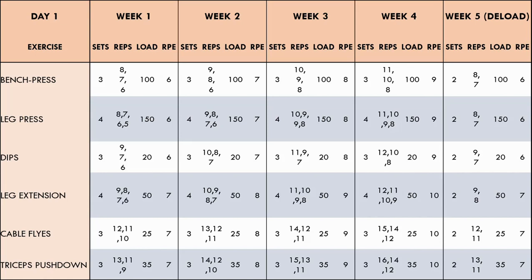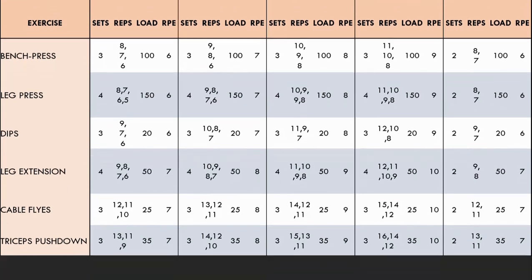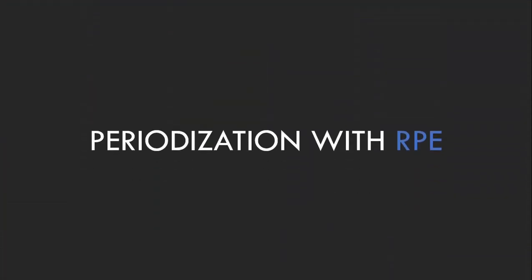Now we have established how RPE can be used for an individual program. We will now cover how we can create a long-term program for hypertrophy. Once the initial program has been completed, we need to make the following program more difficult to adapt to a new stimulus. We should change the program based on how we are progressing with the individual exercise, rather than changing the entire program for the sake of it. This is because we may be plateauing at one or two particular exercises but still progressing well in the rest, so we'll simply use one exercise as an example for the periodization planning.